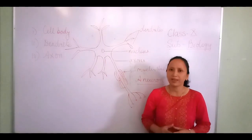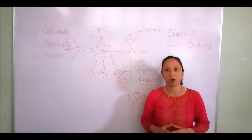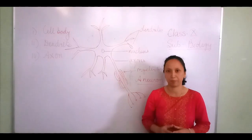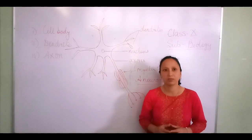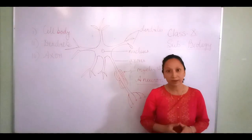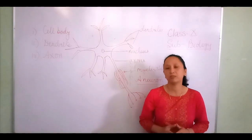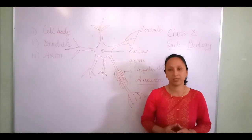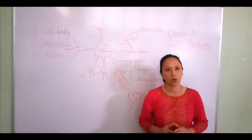Very interestingly, in the human body we have two systems: the nervous system and the endocrine system. These two systems are responsible to control and coordinate the activities of various cells of the body.